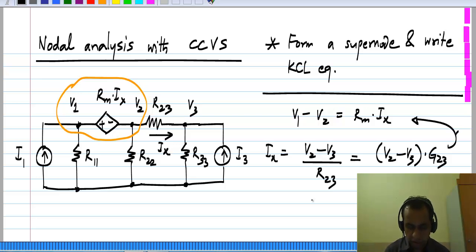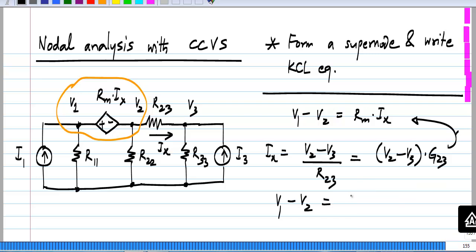So I will put that in that equation and write V 1 minus V 2 to be R m times G 2 3 times V 2 minus V 3.